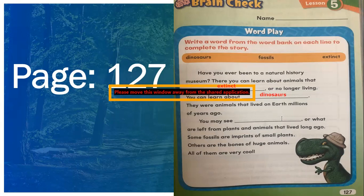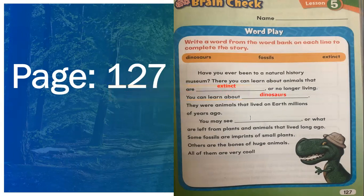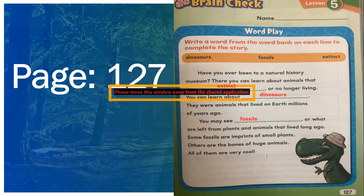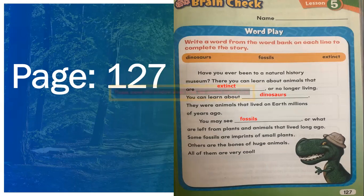Then, you may see dash — what are left from plants and animals that lived long ago? What do you see of the plants and animals that lived long ago? What is found nowadays by scientists? Yes, it is fossils. Write the answer: fossils. F-O-S-S-I-L-S. Very good.